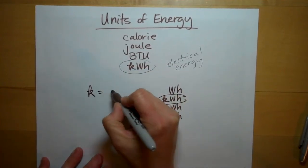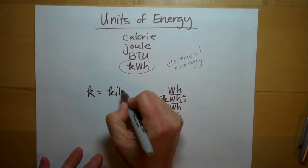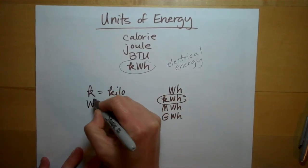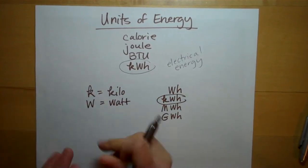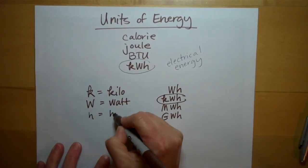The K has got to be lowercase because it's a prefix kilo. The W is capitalized because it's named after James Watt, a physicist. And the H is lowercase for hour.